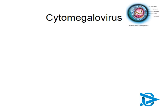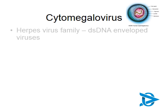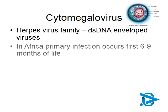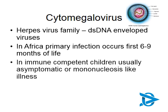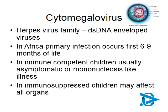Let's move on to CMV, which can affect the central nervous system but can actually affect many organs within children with HIV. The cytomegalovirus is from the herpes virus family — a double-stranded DNA-enveloped virus. In Africa, the primary infection usually occurs within the first six to nine months of life, so most of us have picked up the virus quite early. In immune-competent children, this is usually asymptomatic or a mononucleosis-like illness. But in immunosuppressed children, you can get disseminated disease that may affect all organs.